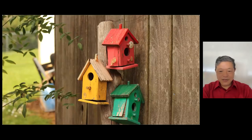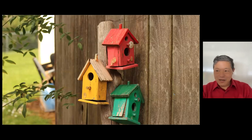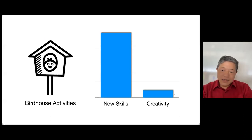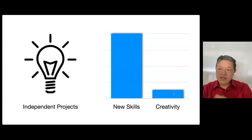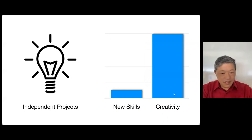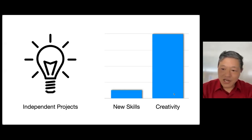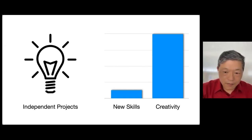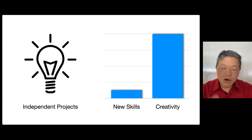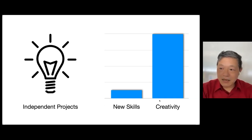The problem with birdhouses is that most schools stop after the birdhouse — they say, we've taught the skills, we've assessed the skills, let's move on. But it's very hard to differentiate with birdhouses. Where we can, we try to offer students the chance to do an independent project. Birdhouse activities are high on new skills but low on creativity. An independent project is lower on new skills but asks them to apply what they've learned in a more creative way. That's where birdhouse activities and independent projects go hand in hand.